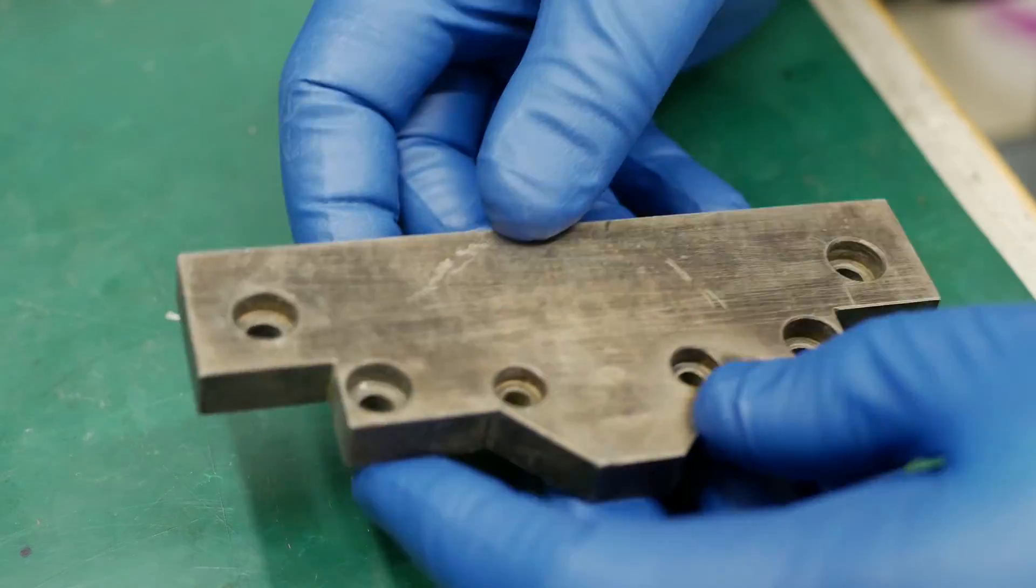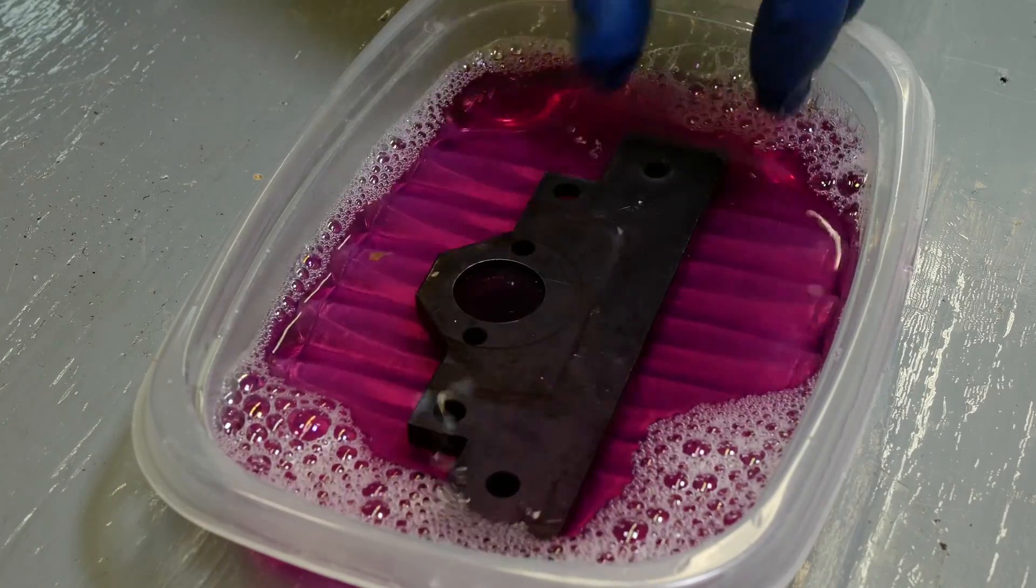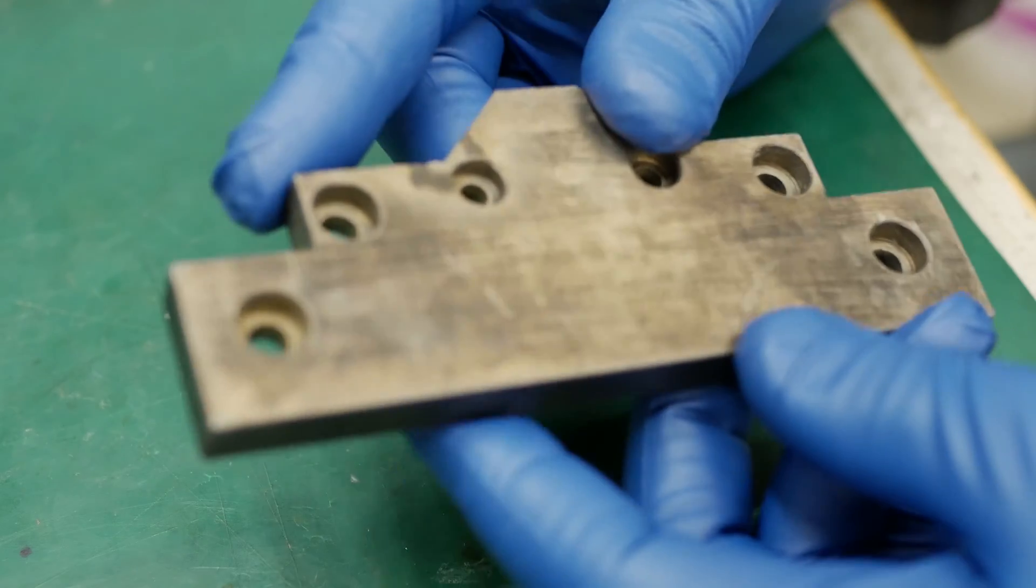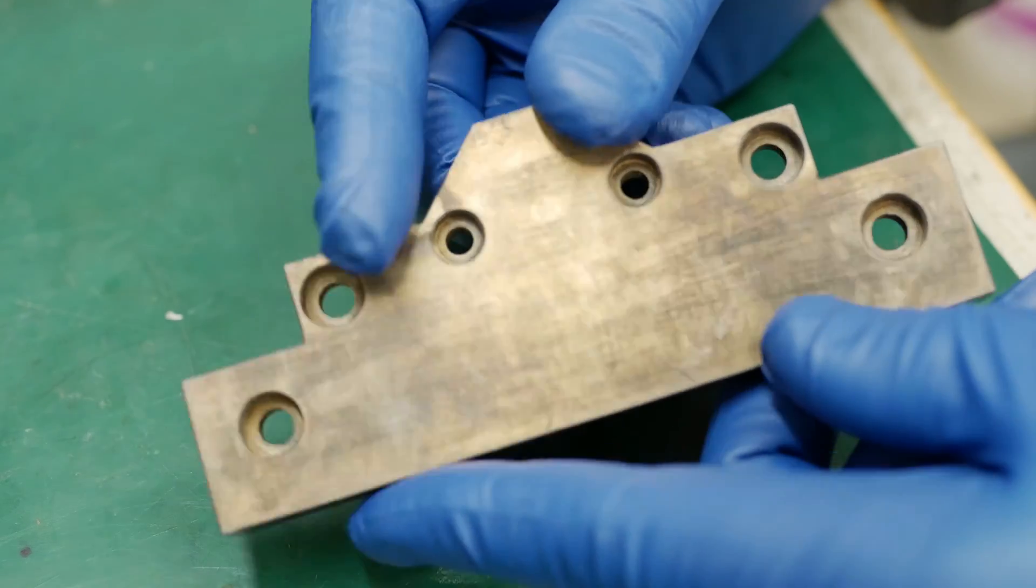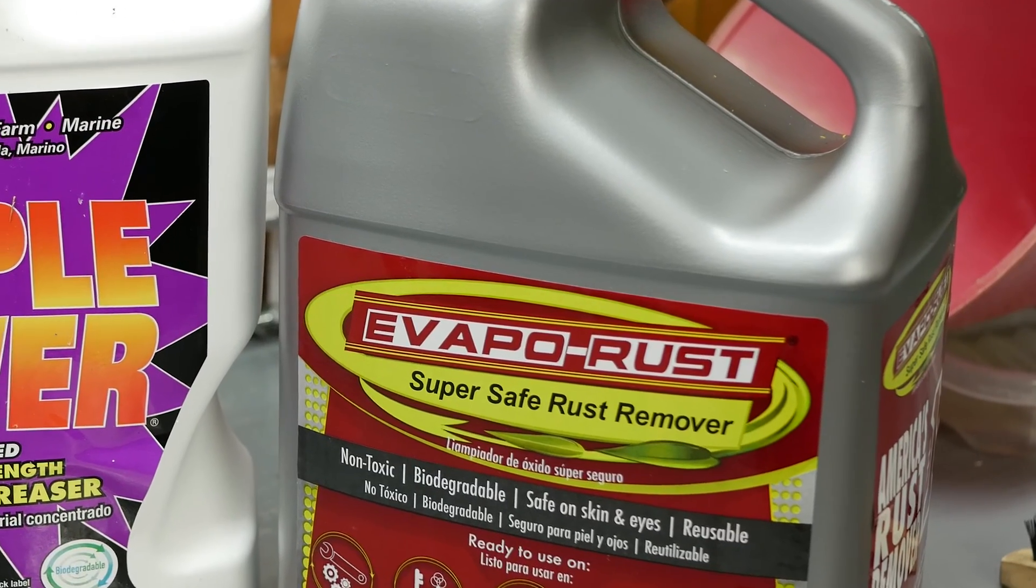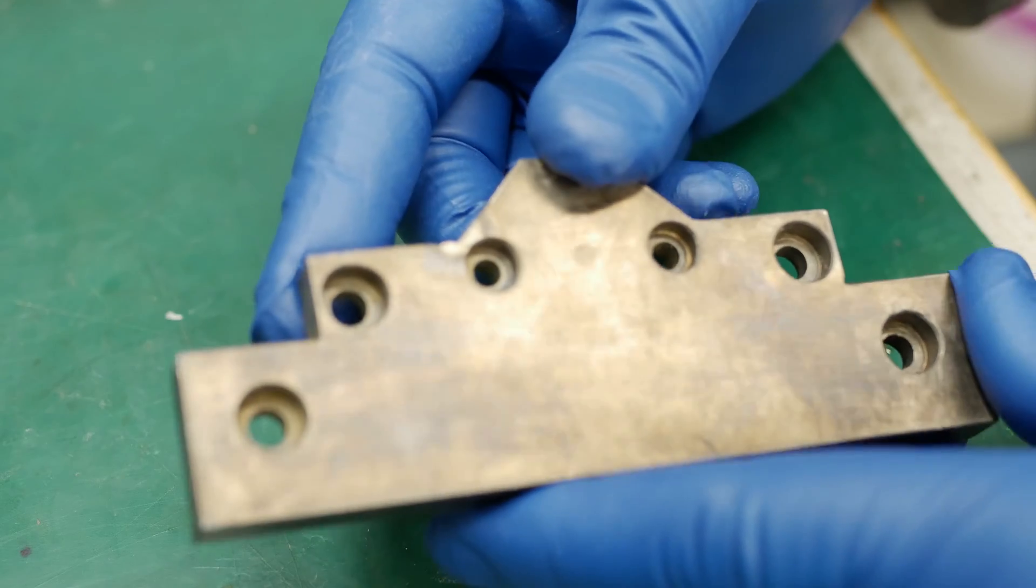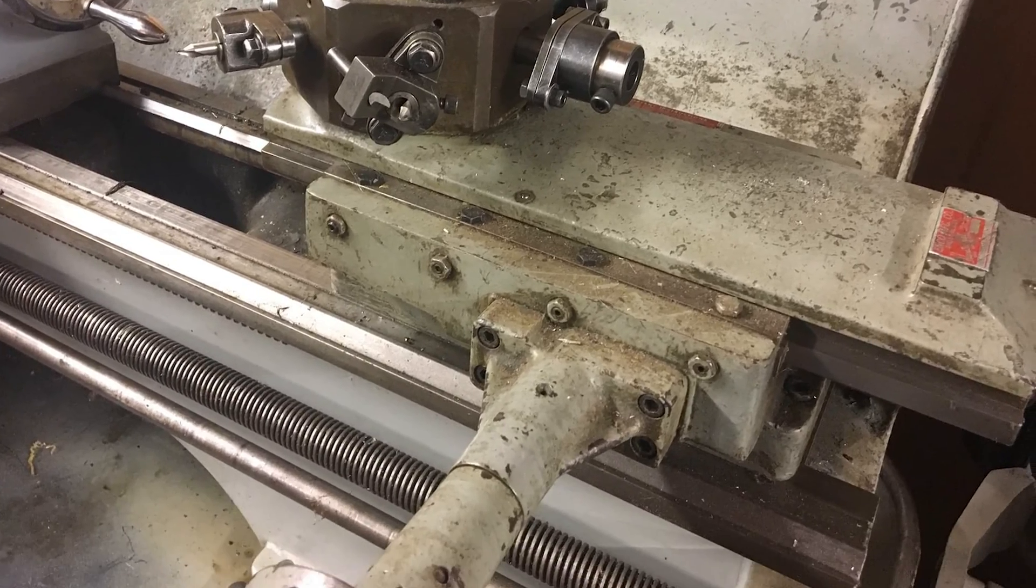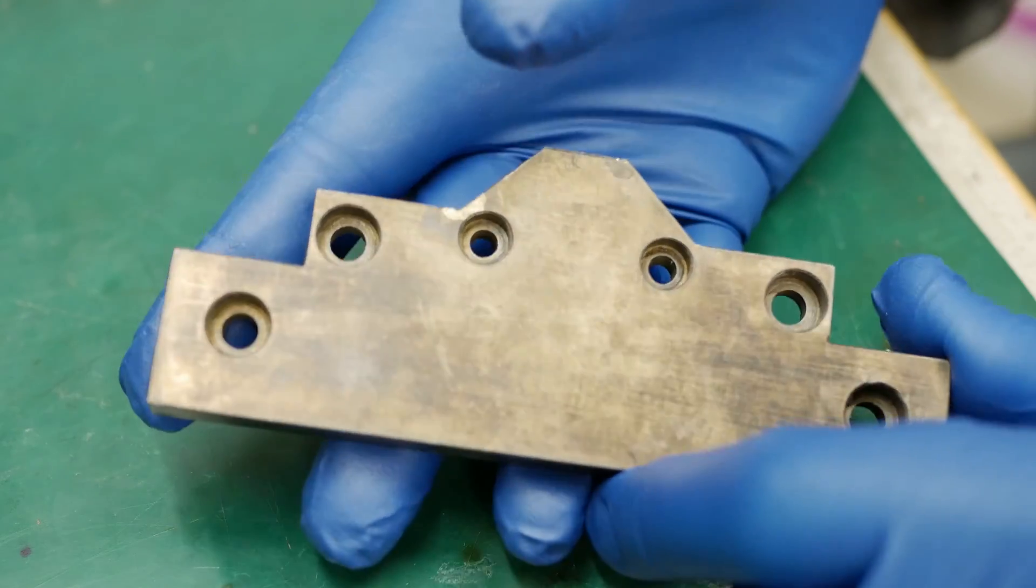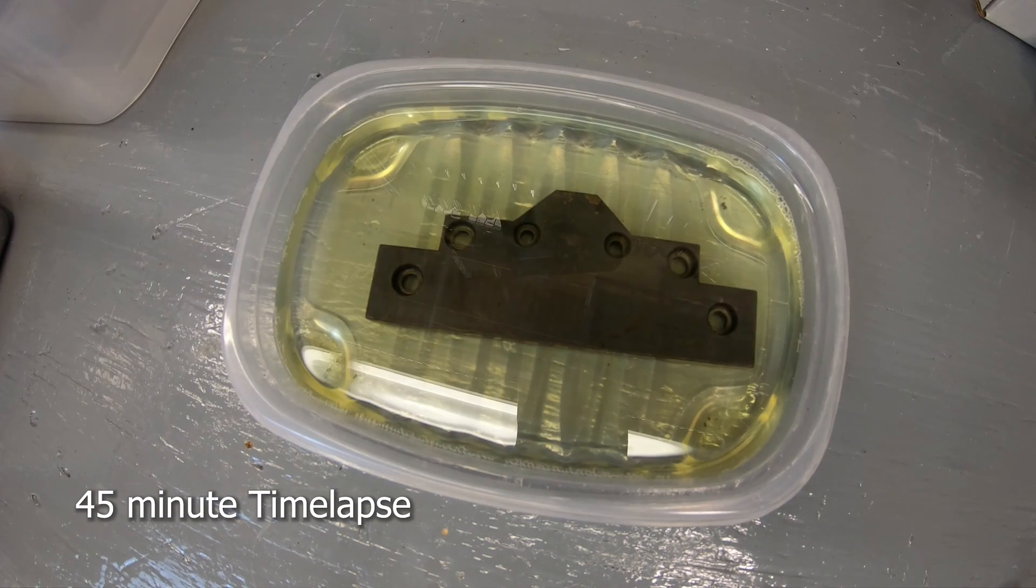I was going to just degrease this thing, and after degreasing it, I decided, well, let's dump it in the evaporust and see what happens. Now, evaporust is something I haven't used before. I picked up a bottle of it because I've got another project coming up where I'm going to be doing a restoration of an old ENCO hex turret tailstock for my Clausing Colchester lathe. So I figured I'd dunk this part just to get a feel for how it works.